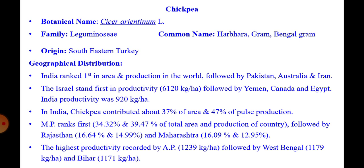Chickpea originated from South Eastern Turkey. As far as geographical distribution is concerned, this gram crop is an important pulse crop in the Indian subcontinent. India ranks first in area and production in the world, followed by Pakistan, Australia and Iran. Israel stands first in productivity at 6120 kg per hectare, followed by Yemen, Canada and Egypt. Productivity of India compared to other countries is very low at 920 kg per hectare.